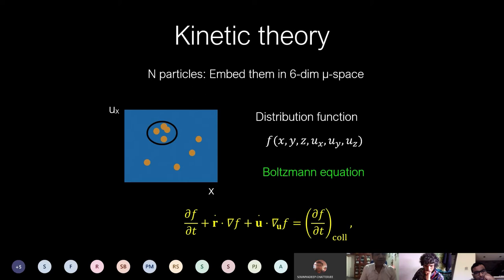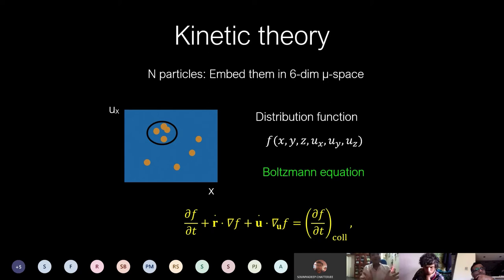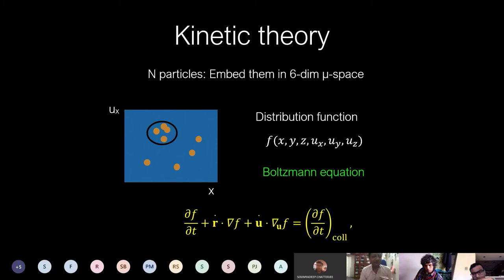Let's look at the connection with kinetic theory of gases, which is useful for this talk. There are N particles embedded in what is called mu-space — six-dimensional space comprising three velocity components (ux, uy, uz) and three spatial coordinates. Normally we think of real space for flow, but here we also have this six-dimensional space. The distribution function f gives the probability of finding a particle at position (x, y, z) with velocity (ux, uy, uz).